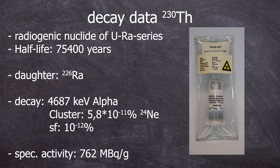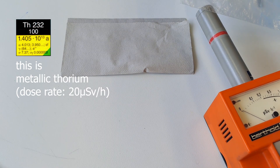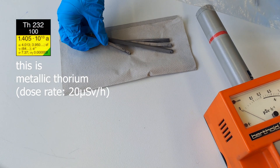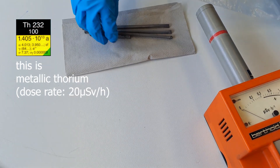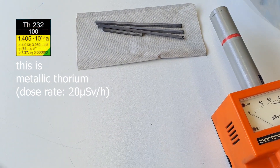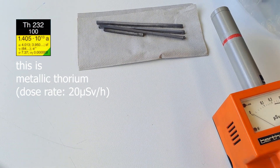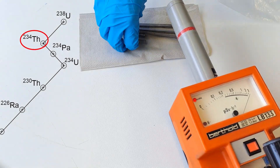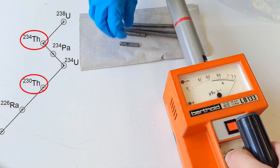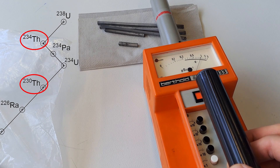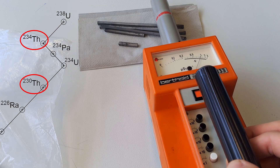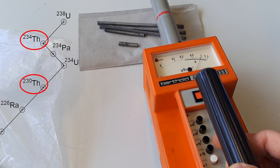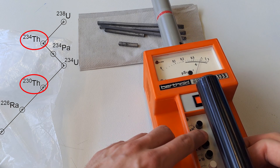Its specific activity is 762 megabecquerel per gram. Thorium normally is isotopically pure, meaning 100% of all naturally occurring thorium is the isotope 232. The decay of natural uranium also produces the isotopes 234 and 230. Thorium-230 makes up about 0.02%.